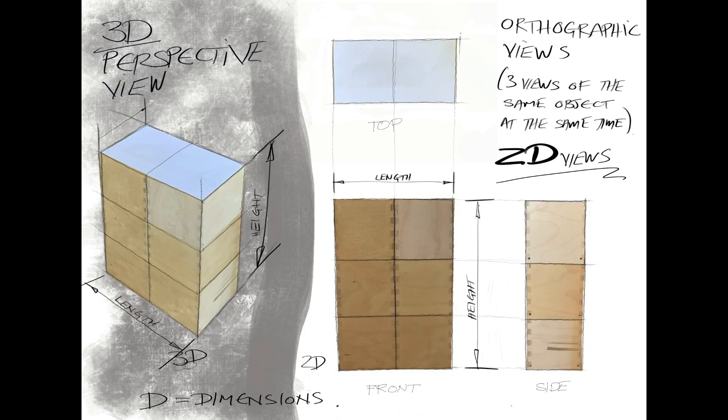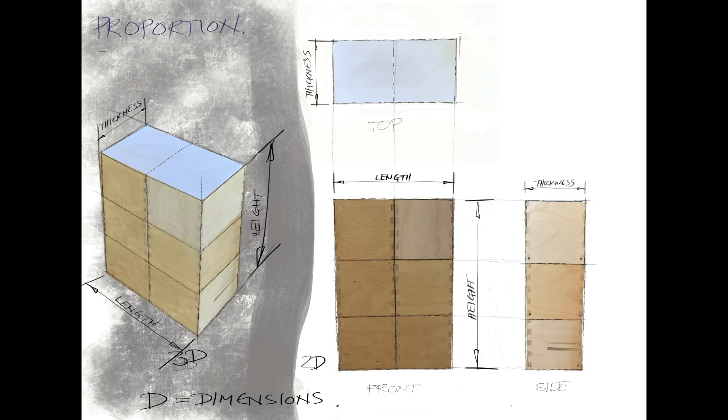One view will show height and length, for example, whereas another view might show the thickness and the length, or one showing the thickness and the height. So again, three views giving as much information as we can.